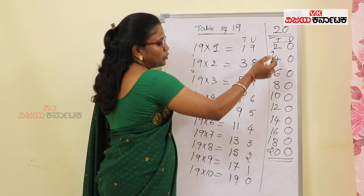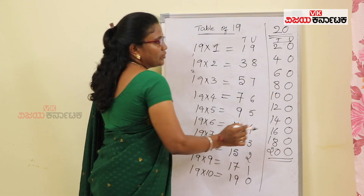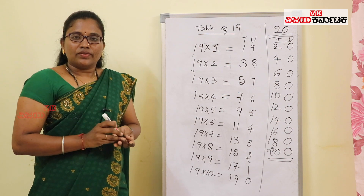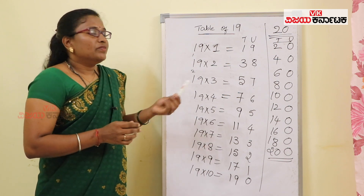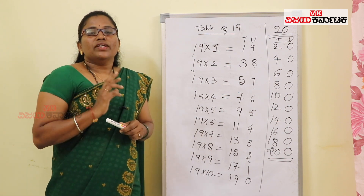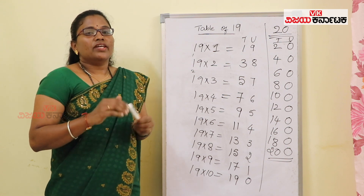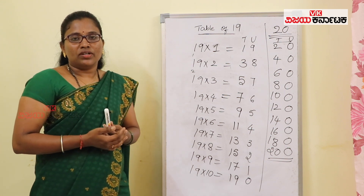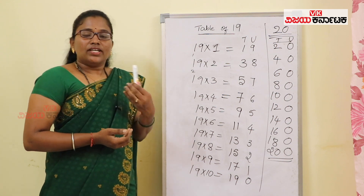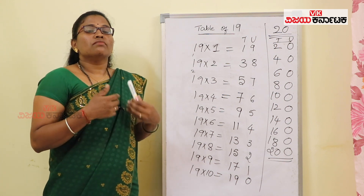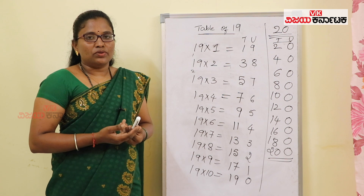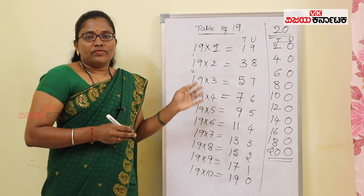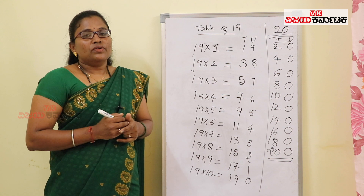So that gives us the 20th table — okay students? Table 2 and table 20 are the easiest to learn. It is easy and simple. So it depends on the individual. Hope you will practice it well.